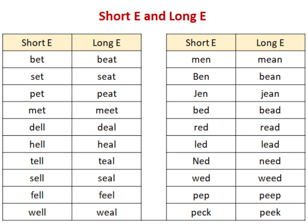Welcome back to our phonics series. Today's topic is Shorty and Longy. Shorty says 'a' and Longy says 'e'. In Longy, it can be 'ea' together which says 'e', or double 'ee'.